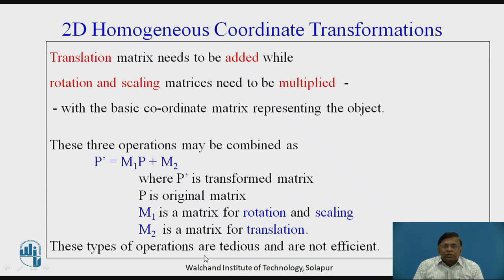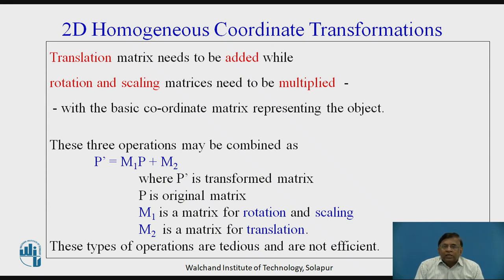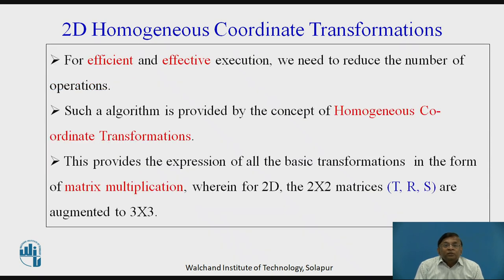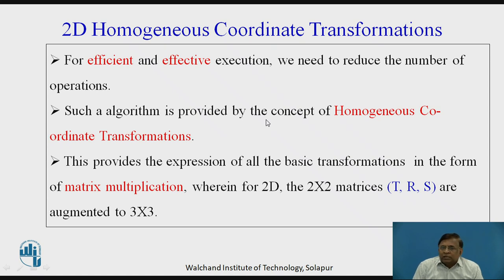But these types of operations are not efficient and are a little tedious, taking more time in execution. We need many times these types of operations to be carried out, wherein the processing time would be a little more. Hence, to have efficient and effective execution, we need some modifications. These modifications are provided by way of what is called the concept of homogeneous coordinate transformations.